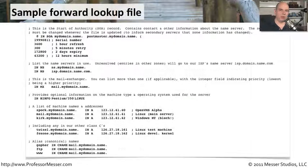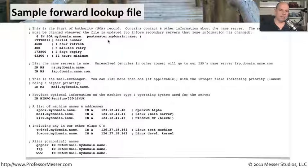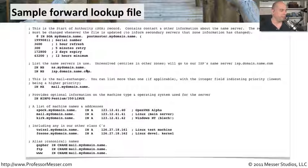Now that we've gone through all of these record types, let's step through our forward lookup file again. At the very top is the Start of Authority record, or SOA record, which gives information about the name server, how long information will be cached, and other important aspects of the name server itself. Then we have DNS records — our MX record, address records, and canonical name records as well.